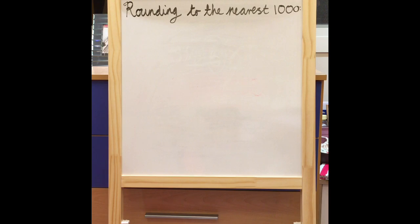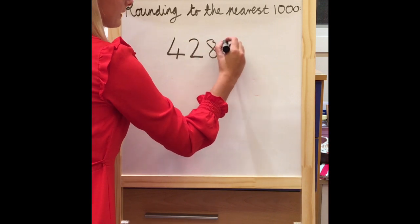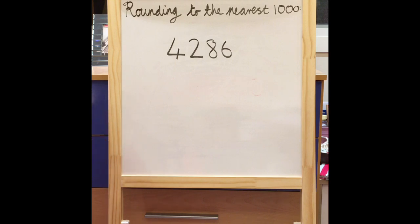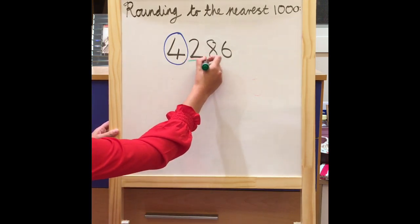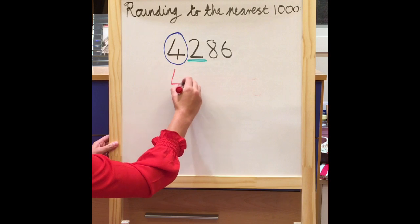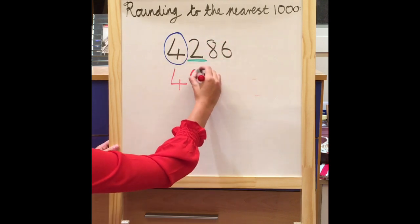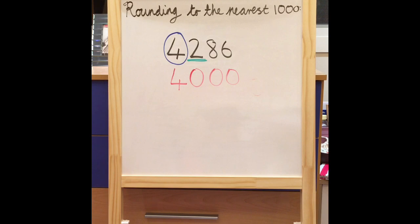Now let's look at rounding to the nearest thousand — again the same principle applies. Let's start with the number 4,286. Because I'm rounding to the nearest thousand I must circle my thousands column. Circle the number, look next door — I need to look next door to my two. Five or greater add one more: two is less than five, so we know we don't need to add one more, so I can just bring my four down. Numbers on the left stay the same — there are no numbers, so I don't need to write anything. Numbers on the right, zero is your name — my numbers on the right need to turn to zero. So 4,286 rounded to the nearest thousand is 4,000.